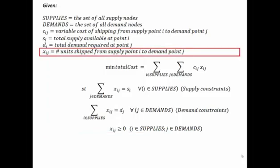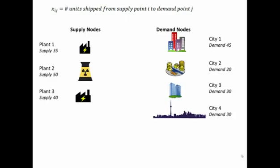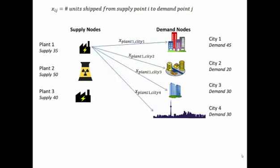Let's start off with the decision variable. xij is equal to the number of units shipped from supply point i to demand point j. In the context of our PowerCo problem, we have our power plants which are supplying power to our cities which need the power. For each one of these possible linkages between the power plants and the cities, there's a decision variable. We have to decide what we're sending from each supply point to each city.